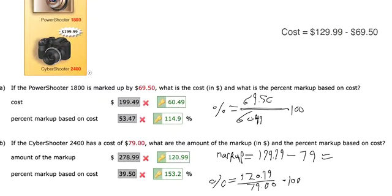And then the last question in this problem says, which camera is more profitable to the store and why? The camera that's going to be the most profitable is the one that has the higher percentage markup. Because they're making more money in profit based on every dollar for each of these items. So you'd want to sell more cyber shooters because your percent markup is higher. You're making more money based on cost.